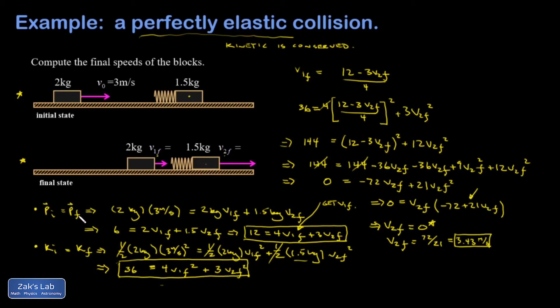So this v2 final equals zero is like before the collision even happens. That would give me the same amount of momentum I started with and the same amount of kinetic energy I started with, but it's not what we're interested in. So I knew the zero was going to happen, and therefore that the factorization was going to be easier, and that's why I tried to solve for v2 final first.